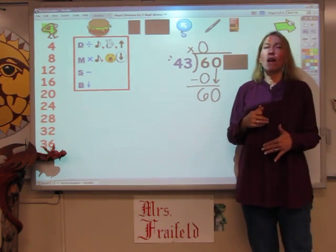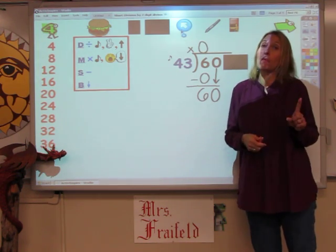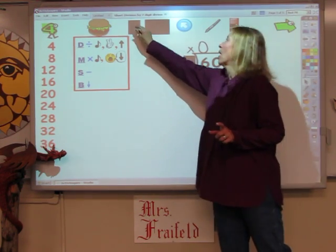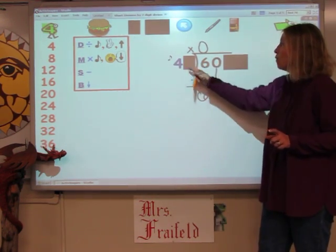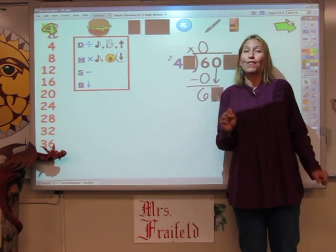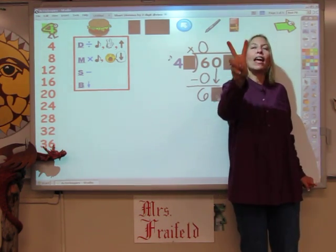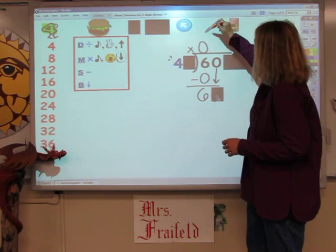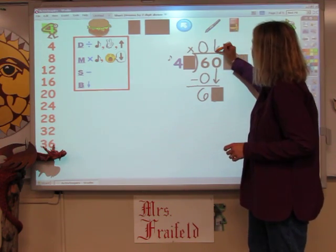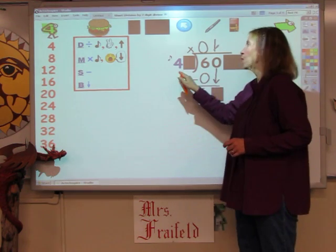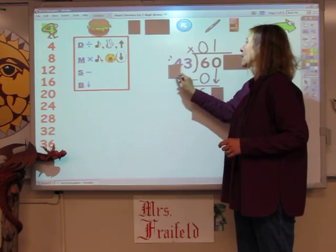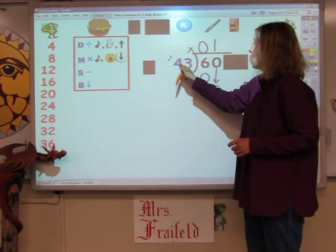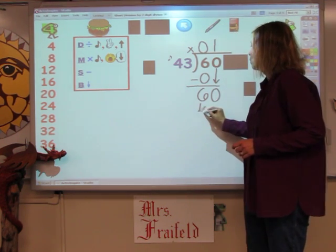Nobody knows their 43 times tables, but I do know my 4 song. So I'm going to cover one digit on the divisor, and if I cover one there, I've got to cover one down here. Now I'm going to sing my 4 song, and when I go over 6, I stop and take my last finger away. 4, 8 — stop. Take the last finger away. I can get one group of 4 out of 6. That's the number I write on top. My next step is to multiply — but before I multiply, I've got to take these covers off, because what I'm really multiplying is 43 times 1. And that's 43.